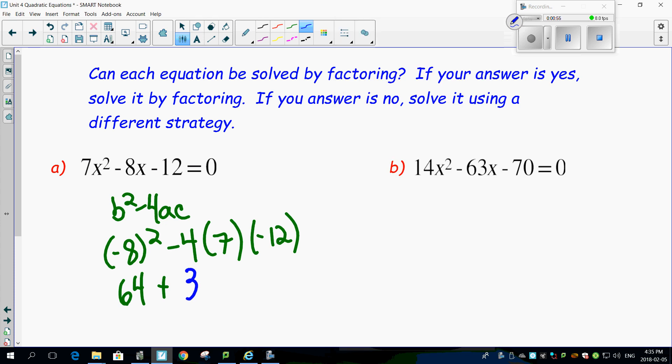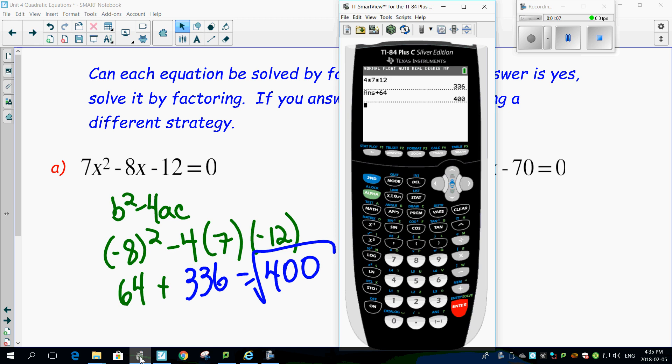Add that to my 64, and I get a value of 400. 336 plus 64 gives me a value of 400. My question is, is that number square rootable? If it's square rootable, then guess what? I'm going to have pretty values. Bring it back here. Second square root of second answer. And look at that. I've got 20.